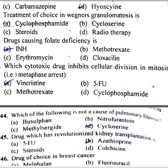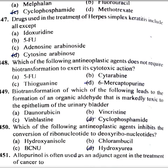Which of the following is not a cause of pulmonary fibrosis? Cycloserine. Drug which has revolutionized kidney transplantation is azathioprine. Drug of choice in breast cancer is cyclophosphamide. Drug used in treatment of herpes simplex keratitis includes all except cytosine arabinoside.